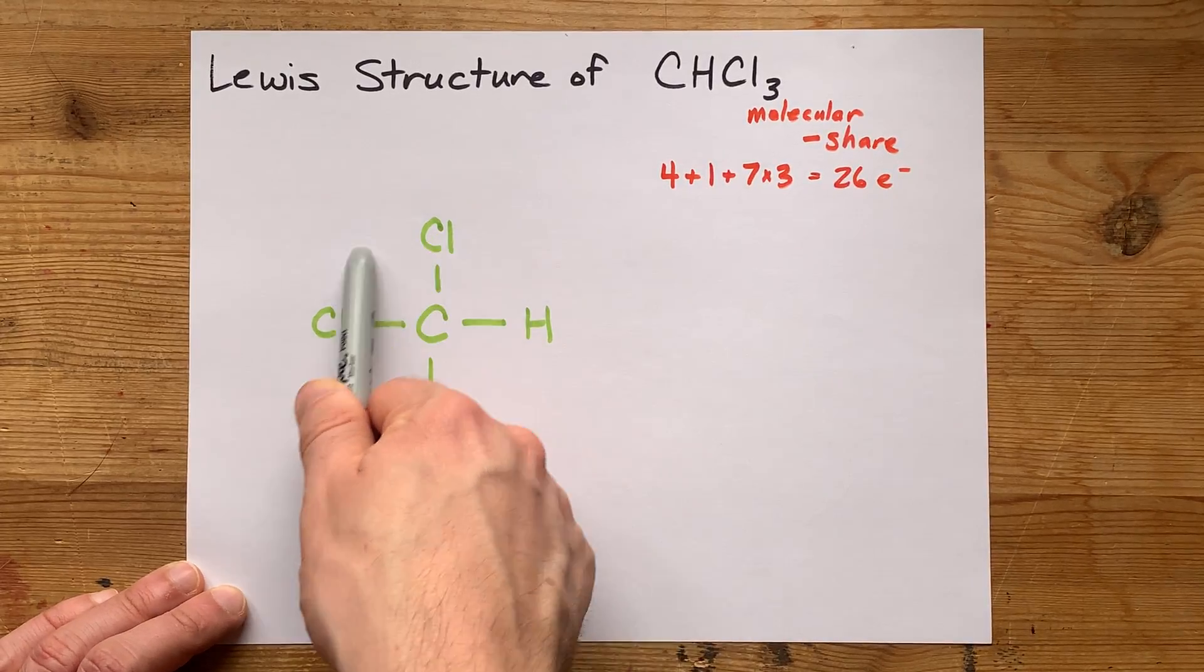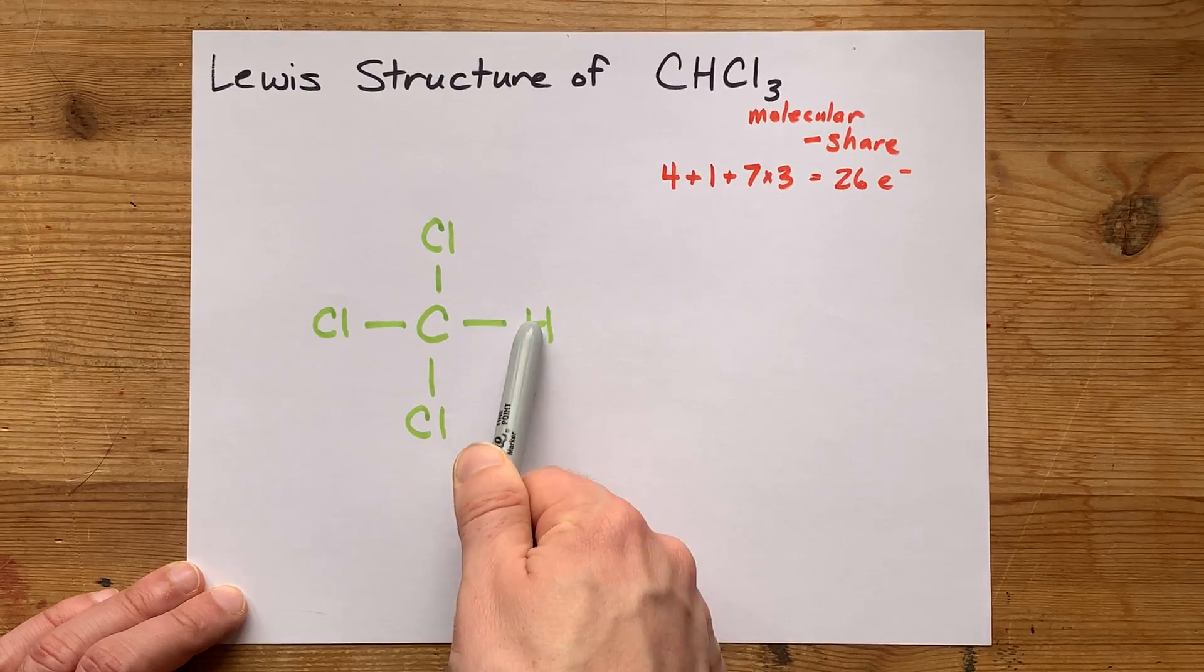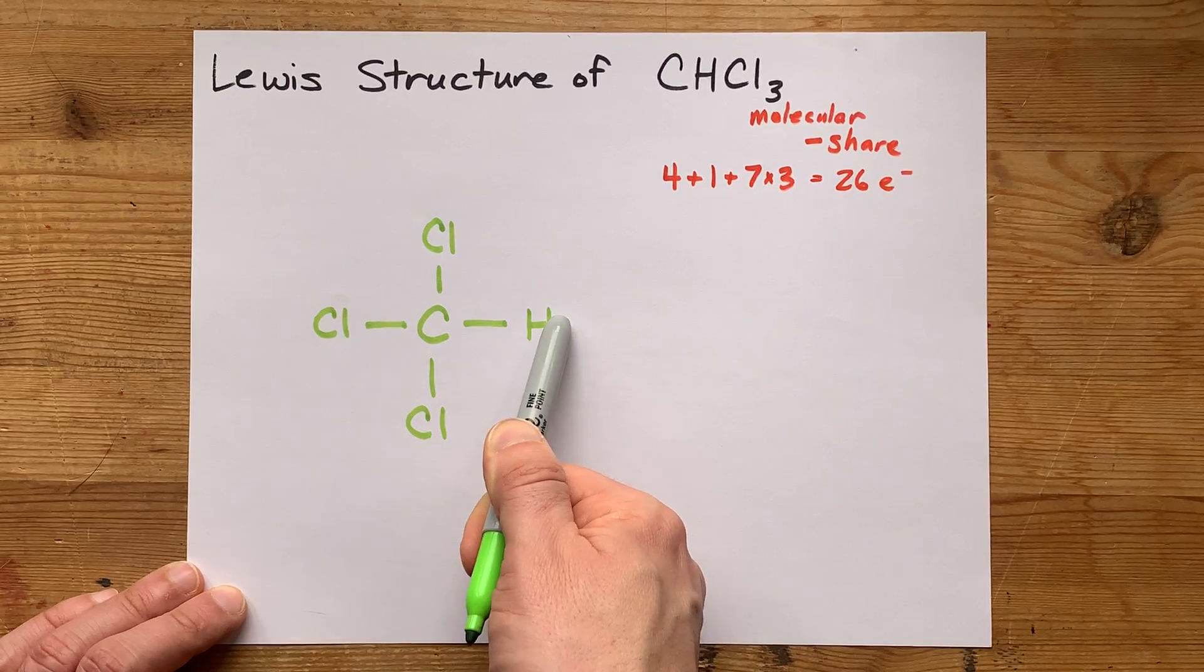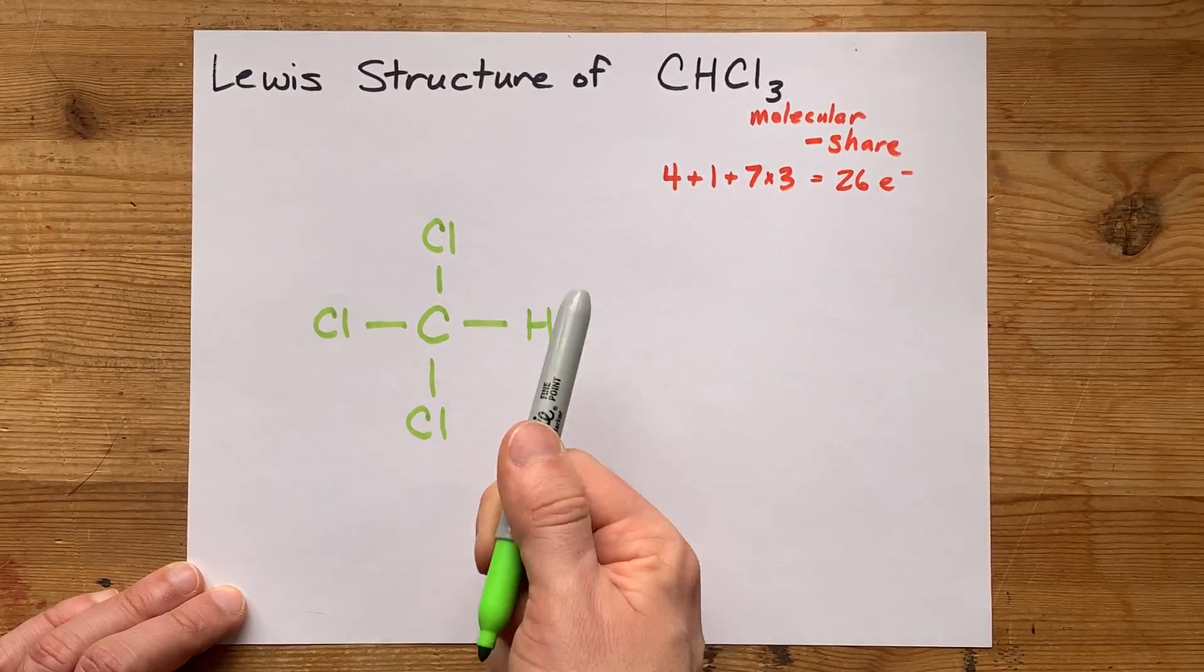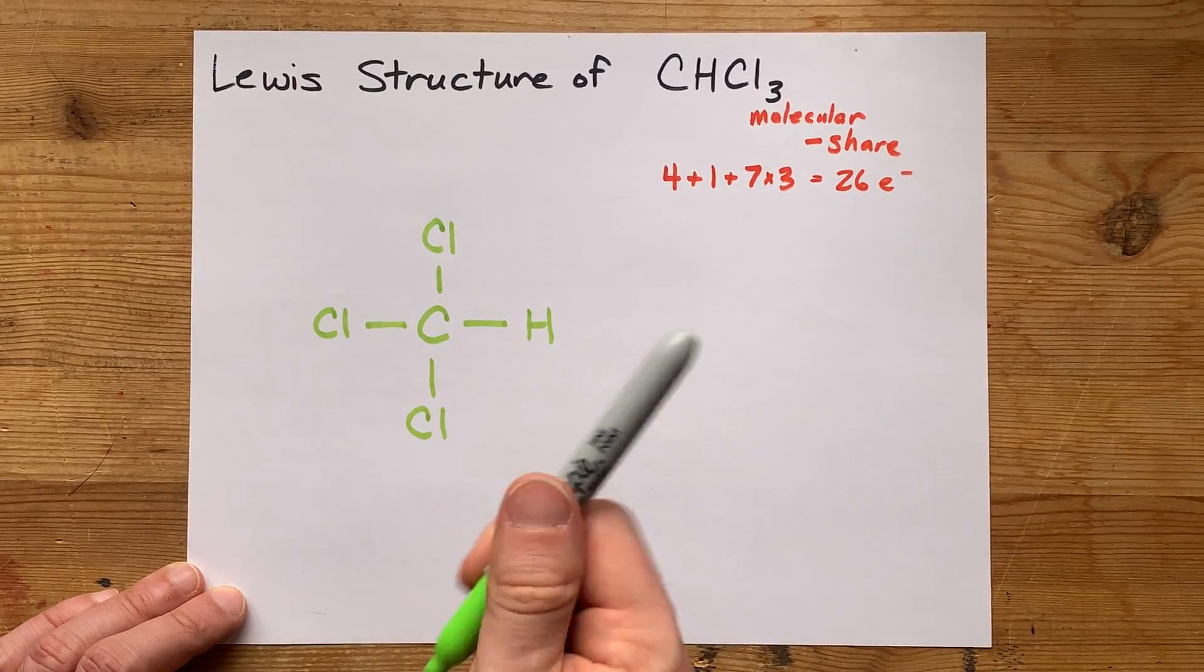So I'm going to fill the octets on the outer atoms. Hydrogen does not need an octet. It's already stable as is. It follows something called the doublet rule. It already has two electrons attached to it, so it's done. I'm going to count up to 26 by completing the octets on my chlorines.